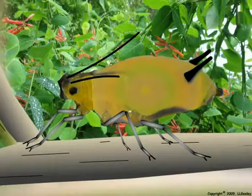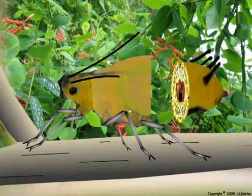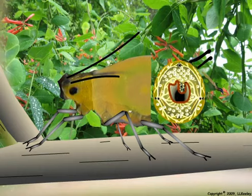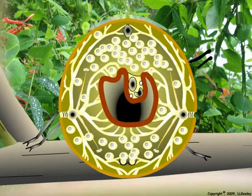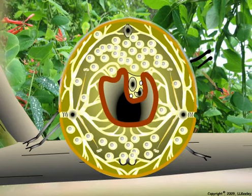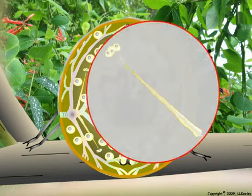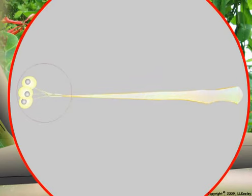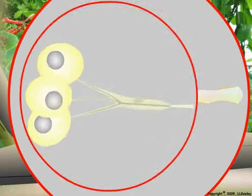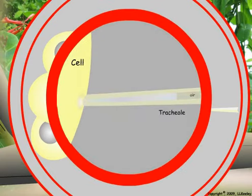Here we see a cross-section of the aphid abdomen. Droplets of soap spray land on the abdomen and the soap spreads quickly across the wax layer. The soap spreads along the wax lining of the trachea. Here we see one of the smaller trachea as it fills with soapy water. Soapy water fills the tracheoles down to the cells. The soap spreads from the tracheole over the surface of the cell and is absorbed into the cell membrane.